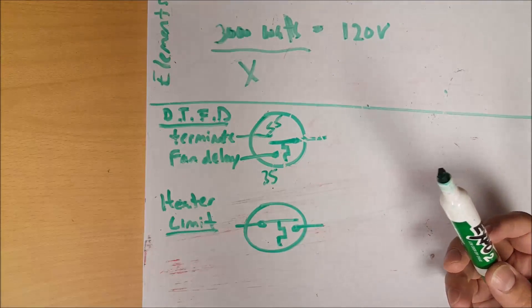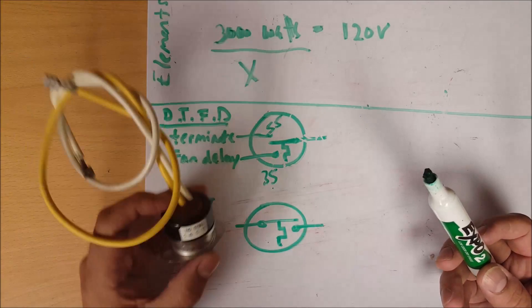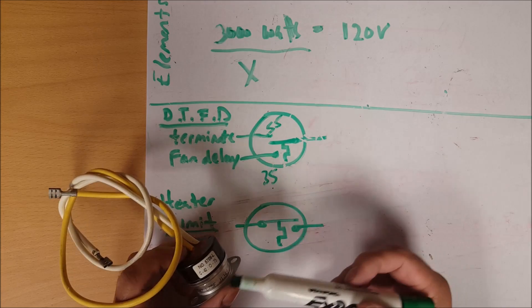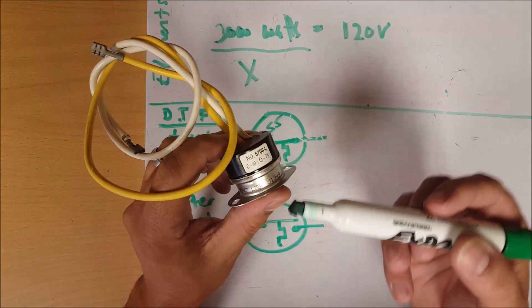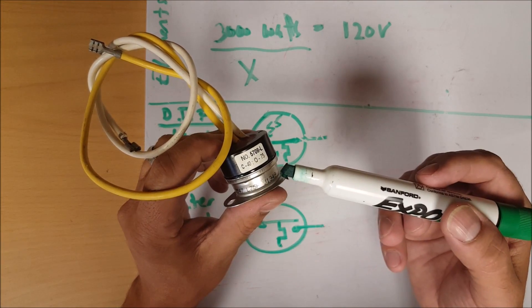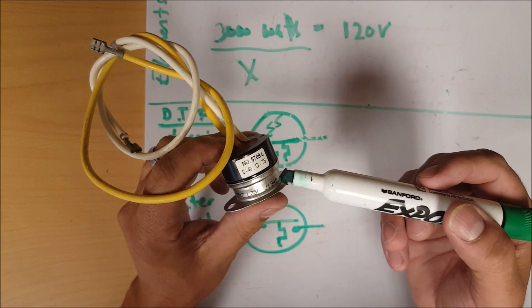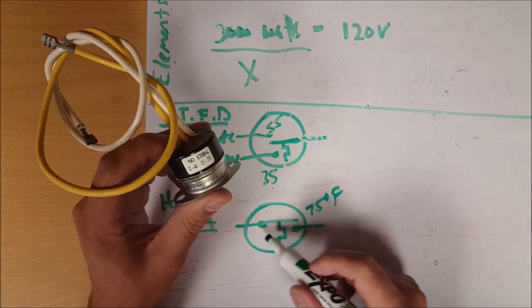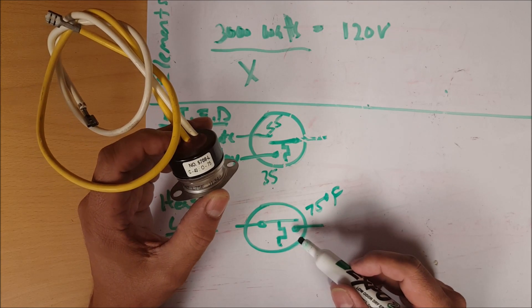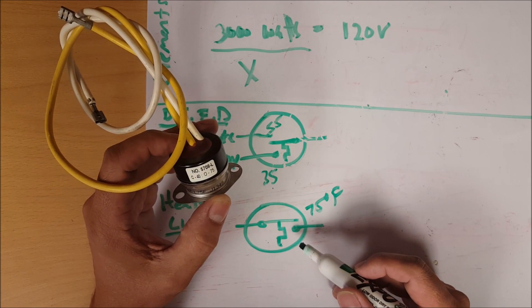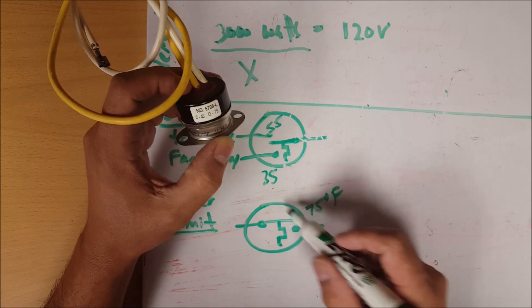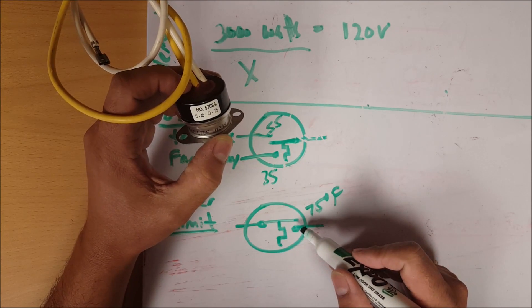Next one is going to be your heater safety limit switch. This switch says C is 40 and O is 75, so it closes at 40 and opens at 75. Basically at 75 degrees, if the heaters are energized and let's say they get stuck running or run for an excess amount of time, when this switch hits 75 degrees it's going to open.